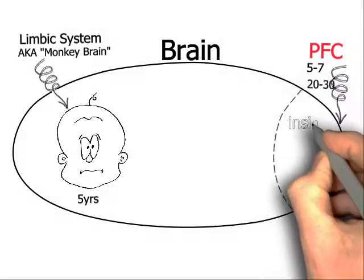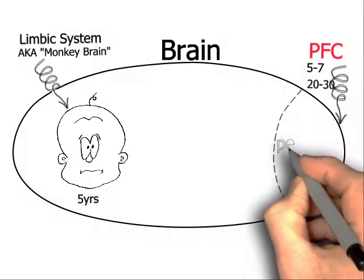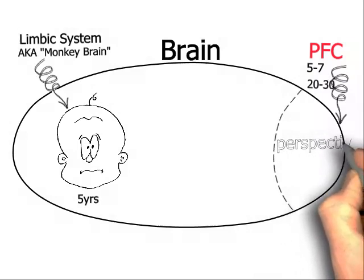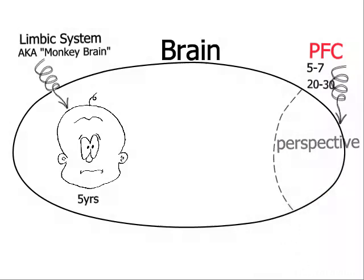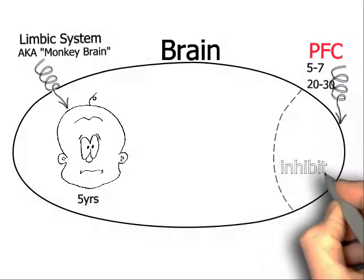In that part of the brain, we get insight. We look at a situation, and we get perspective. And it's also where we have inhibitions. It's like the traffic cop for the rest of the brain.